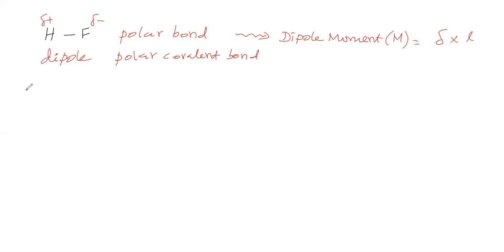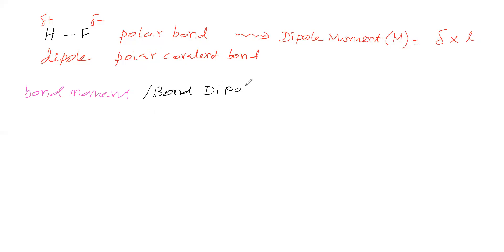The dipole moment of a bond is called a bond moment, or bond dipole. So bond moment or bond dipole means the dipole moment of a bond.